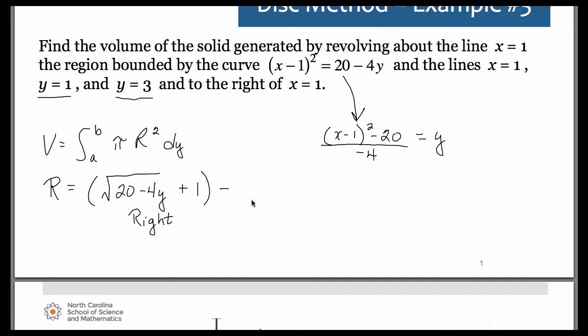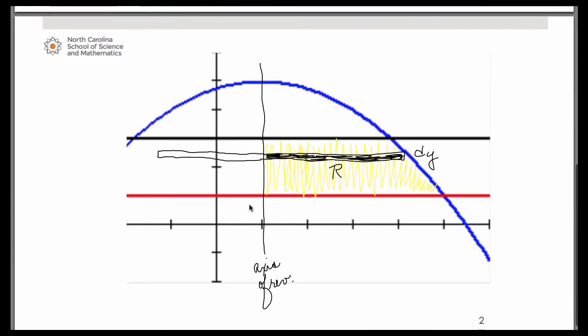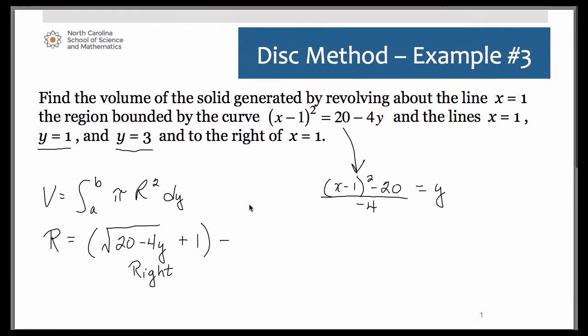Now on the left side, it's simply hitting, if you go back to your picture, the representative rectangle on the left side is hitting that vertical line at x = 1. So this is simply going to be minus 1. So obviously the 1s cancel out and all you're left with is the square root quantity. So that is the length of our representative rectangle.